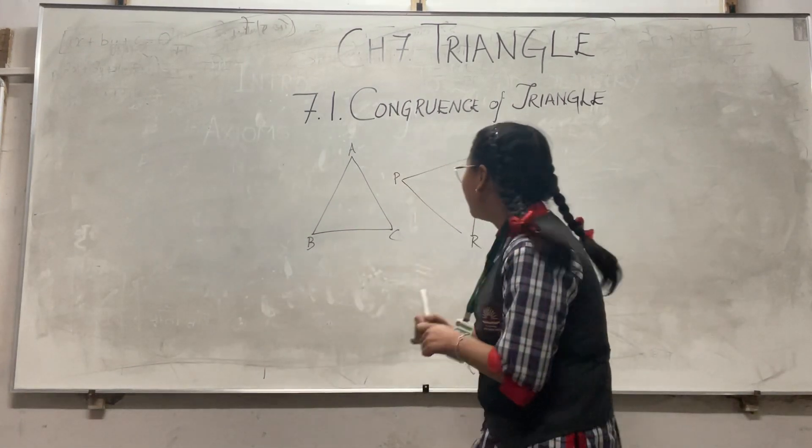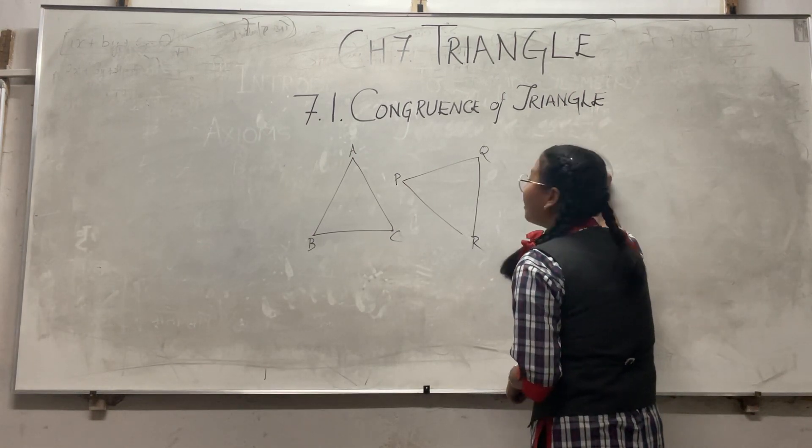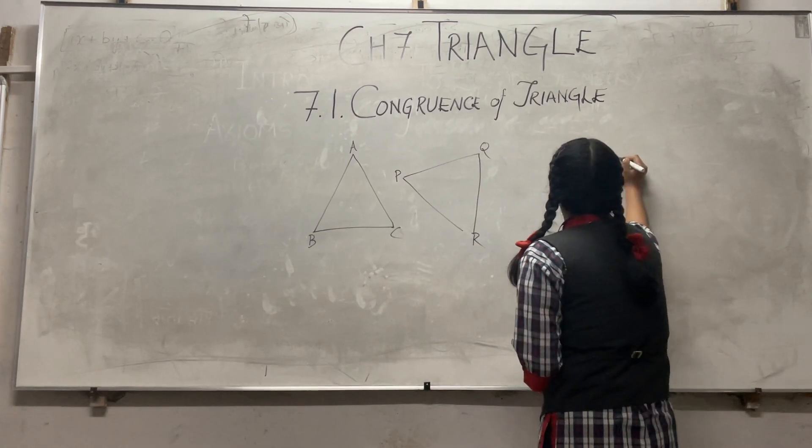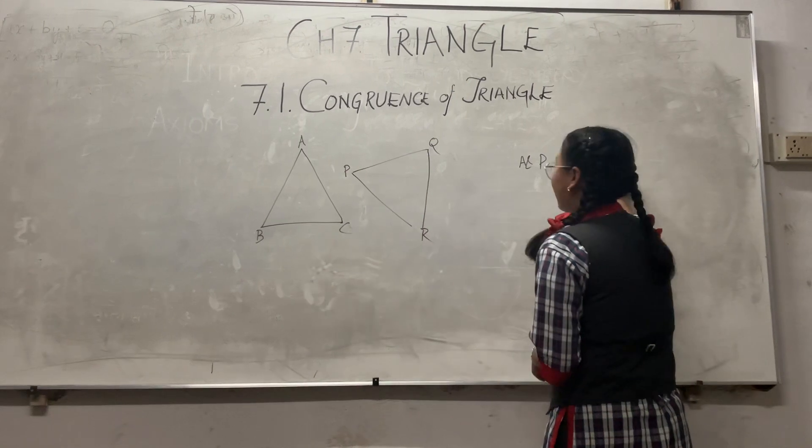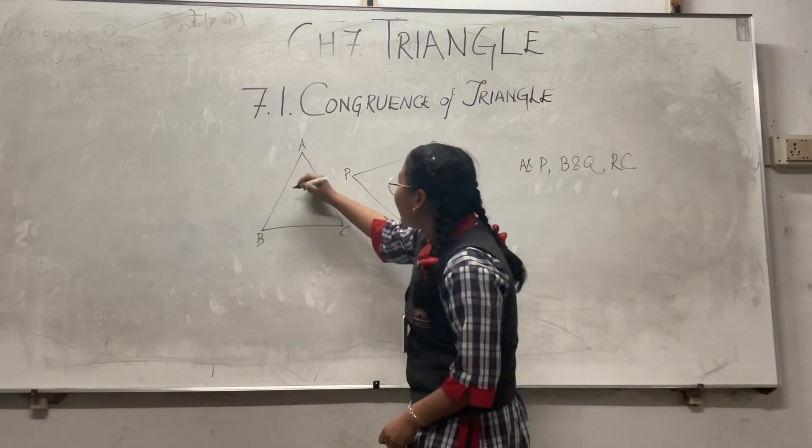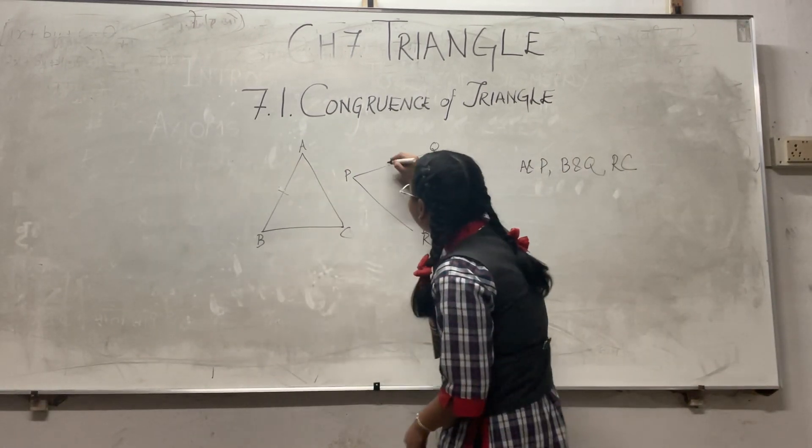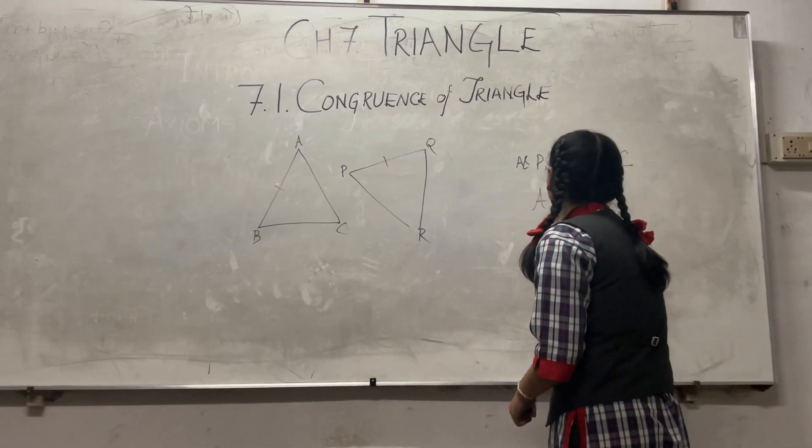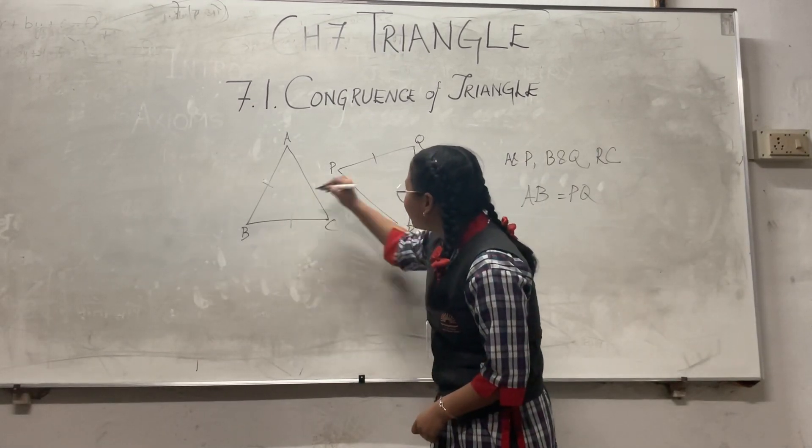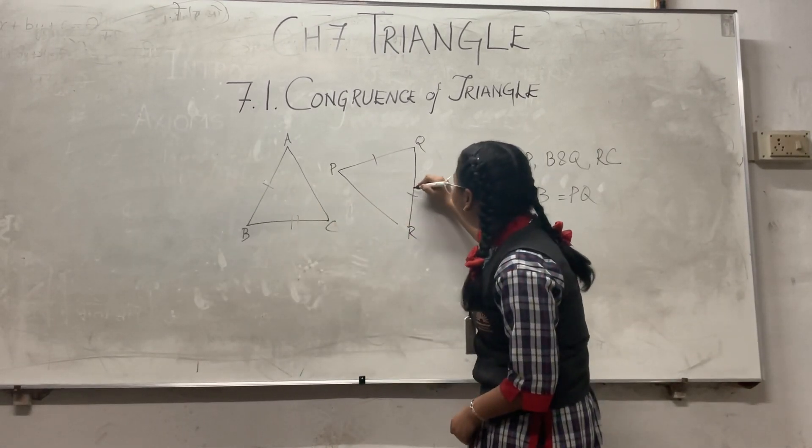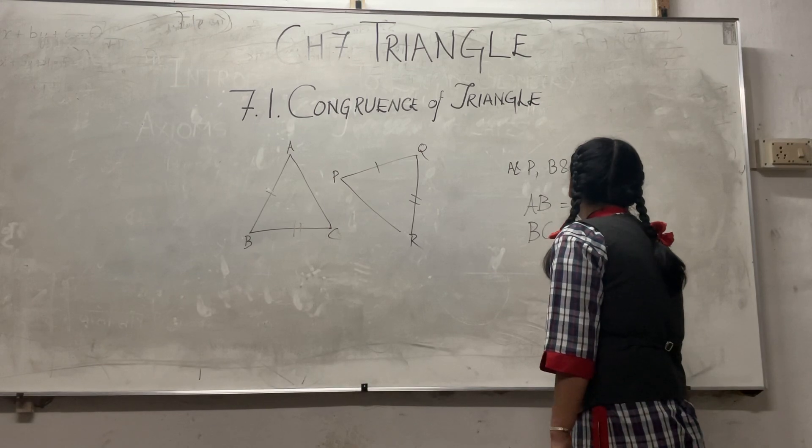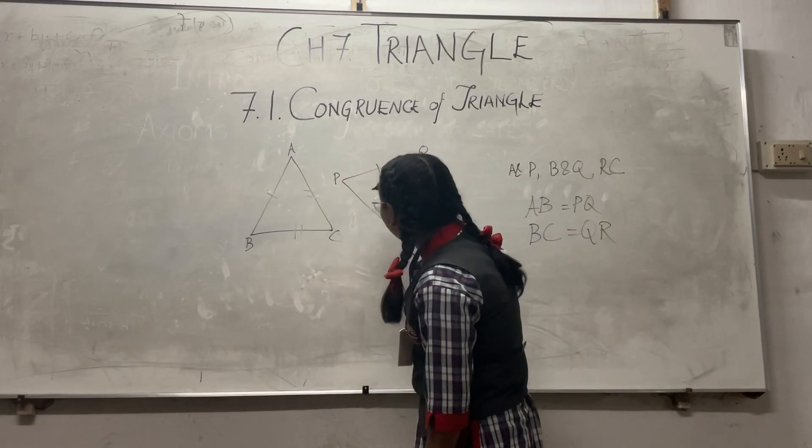In this given triangle, we have vertices A and P, and B and Q, and R and C. So in this given triangle, AB is equal to PQ, and BC is equal to QR, and AC is equal to PR.